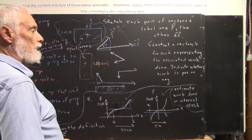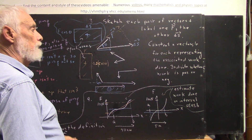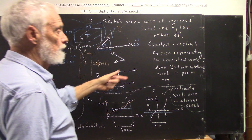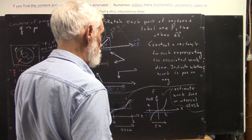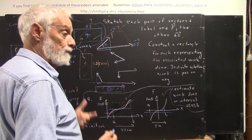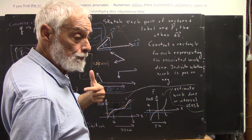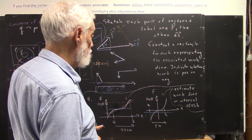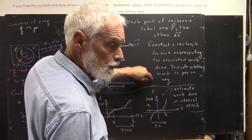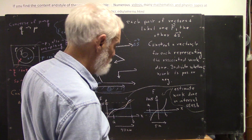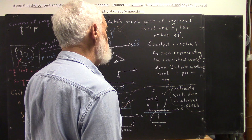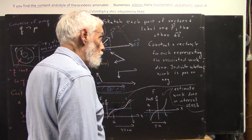Now I asked that everybody construct a rectangle for each pair of vectors representing the associated work done, assuming that F is a force exerted on some object and delta S is a displacement vector. This is something we've seen before but nobody seemed to remember, so we did quite a bit of review.